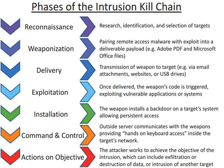A resource — both physical or logical — called an asset, can have one or more vulnerabilities that can be exploited by a threat agent in a threat action. As a result, the confidentiality, integrity, or availability of resources may be compromised. The damage may extend to resources beyond the one initially identified as vulnerable, including further resources of the organization and the resources of other involved parties such as customers and suppliers. The CIA triad is the basis of information security. An active attack compromises integrity or availability, while a passive attack compromises confidentiality.